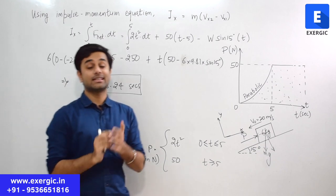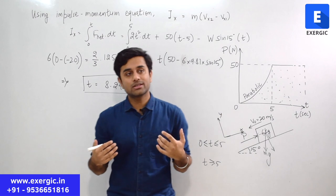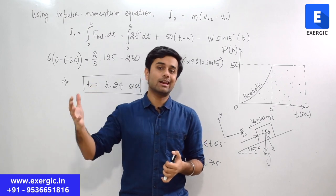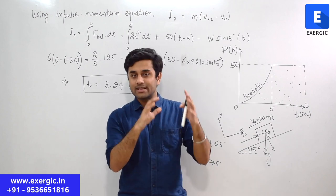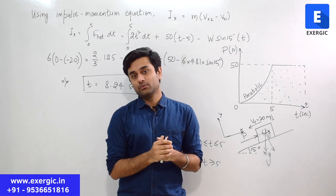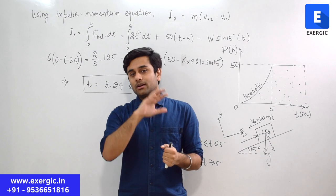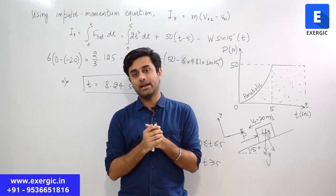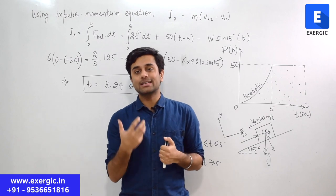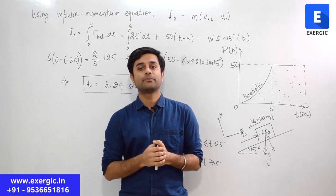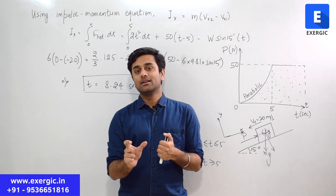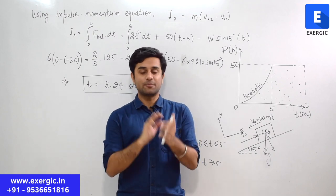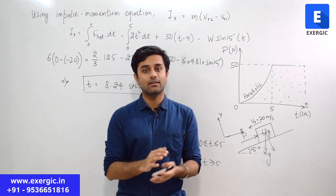Don't just go through the solution — try to conclude something from questions. For such questions, remember the initial tip: write down the general parameters given to you, and then think which expression or approach will be most suitable. This whole question's solution revolved around the impulse-momentum equation. If you take time to figure out that it needs to be applied, the question becomes easier. Use this tip especially if you are facing difficulty in starting a question.